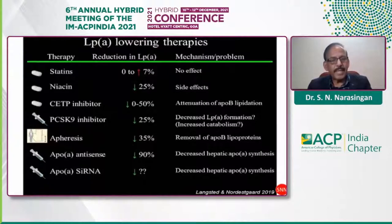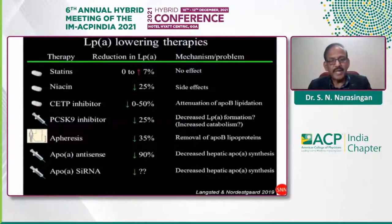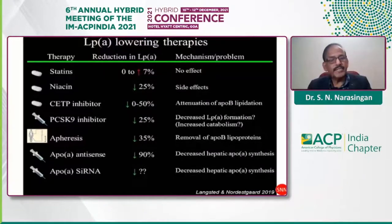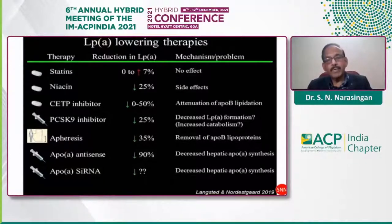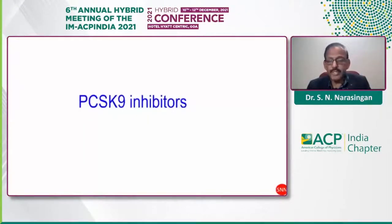CETP inhibitors — dalcetrapib, anacetrapib, evacetrapib — did not show cardiovascular benefit despite reducing lipoprotein(a) by 0–50%. PCSK9 inhibitors have shown a 25% reduction in Lp(a). Apheresis can reduce lipoprotein(a) by 35%. Apo(a) antisense therapy is a very important development that can reduce lipoprotein(a) by up to 90%. Apo(a) small interfering RNA is also promising, and we await published results.